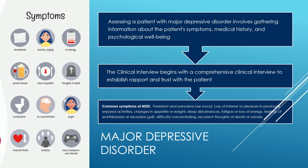Assessing a patient with major depressive disorder involves gathering information about the patient's symptoms, medical history, and psychological well-being. It typically involves key steps. The clinical interview begins with a comprehensive clinical interview to establish rapport and trust with the patient. Explain the purpose of the assessment and ensure that they feel comfortable sharing their thoughts and feelings. Gather a detailed patient history including medical, psychiatric, and family history. Inquire about any family history of mood disorders or other mental health conditions.